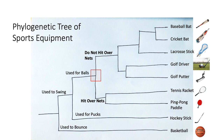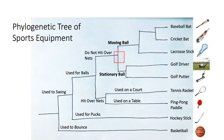Tennis rackets and ping-pong paddles diverged due to the fact that they hit balls over nets, while the other OTUs do not. Tennis rackets and ping-pong paddles then split because tennis rackets are used on a court while ping-pong paddles are used on a table. Cladogenesis occurs at the next internal node since golf drivers and putters are used for stationary balls, like hitting off a tee.